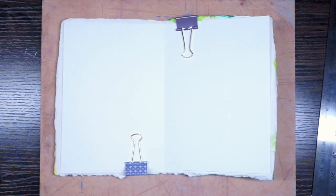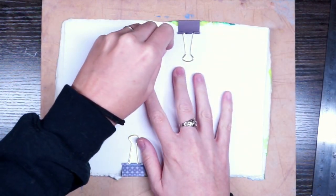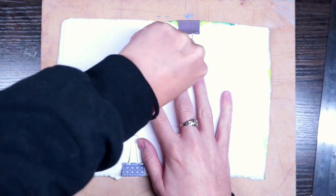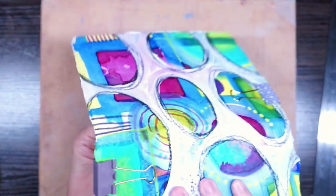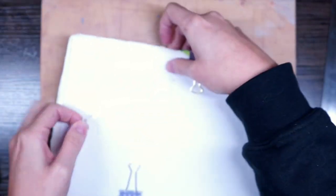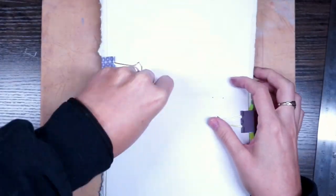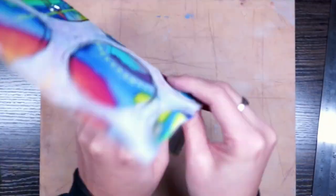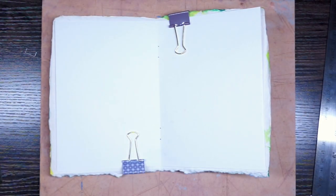Now all I need to do is take my little thumbtack and I'm going to press into it, give it a little wiggle to make sure it goes all the way through. I can see it go through, and repeat the process. I have my holes in place.